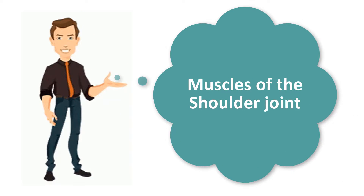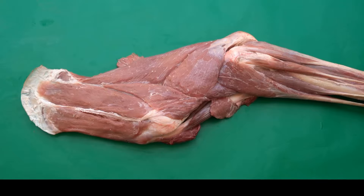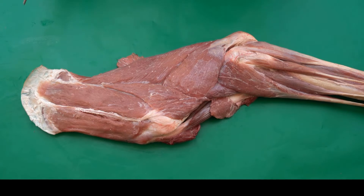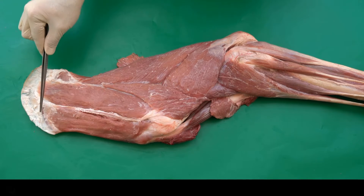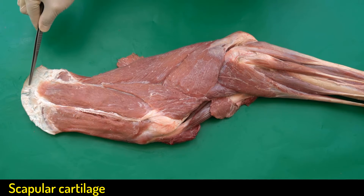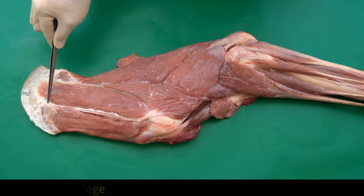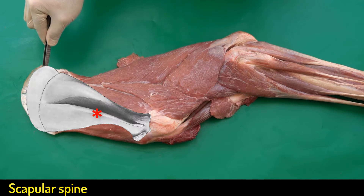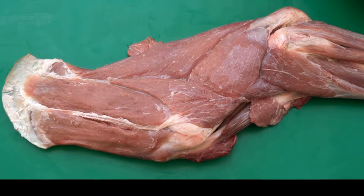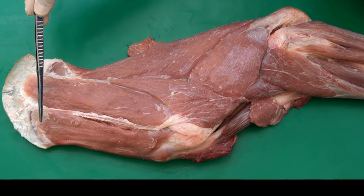Hello everyone, this is Ahmed and I would like to welcome you to another anatomy tutorial where we are going to continue working on the muscles of the shoulder joint, and at the same time we may look at some other muscles found in this region. This is a lateral view of the forelimb of the camel where we can see the scapula. This here is the dorsal border of the scapula with the scapular cartilage, and in the lateral view we can easily identify the scapular spine here in the middle.